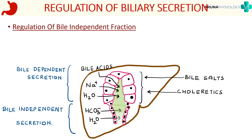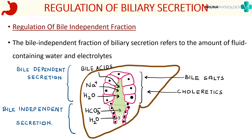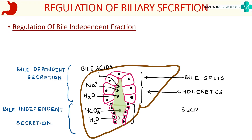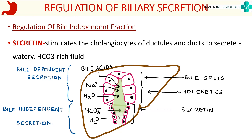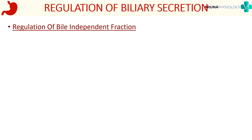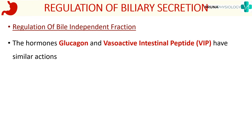The bile independent fraction is the amount of fluid containing water and electrolytes — where the ductile cells increase alkalinity and make bile more watery. The bile independent fraction is mainly regulated by the hormone secretin, which stimulates the cholangiocytes of the ductules and ducts to secrete a watery, bicarbonate-rich fluid, increasing secretion of bicarbonate and water into the duct. Other hormones involved are glucagon and vasoactive intestinal peptide (VIP), which have actions similar to secretin.